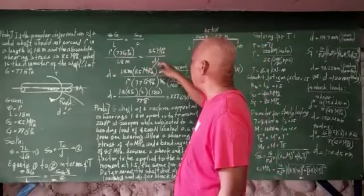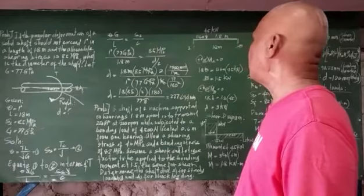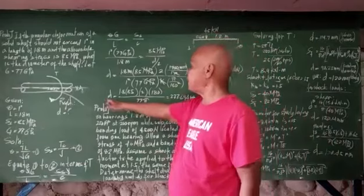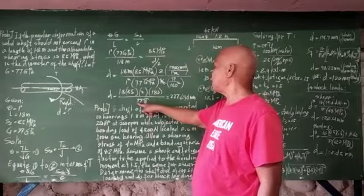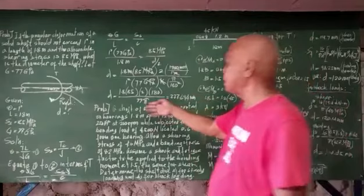Solving for D: D is equal to 1.8 meters times 85 mega Pascal times 2, all over 1 degree times 77 giga Pascal times pi over 180. So we will have D equal to 227.694 millimeters. That will now be the diameter of the shaft.